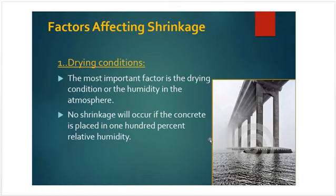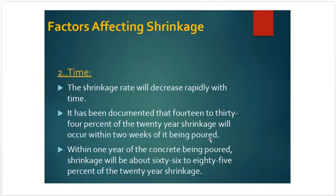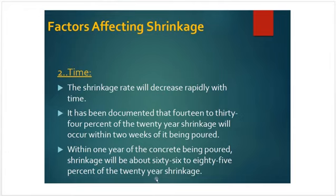The shrinkage rate decreases rapidly with time. It has been documented that 14 to 34 percent of the 20-year shrinkage will occur within two weeks of concrete being produced. So whatever shrinkage would have occurred over 20 to 25 years will largely occur within the two weeks of production. Within one year of the concrete being produced, shrinkage will be about 66 to 85 percent of the 20-year shrinkage.